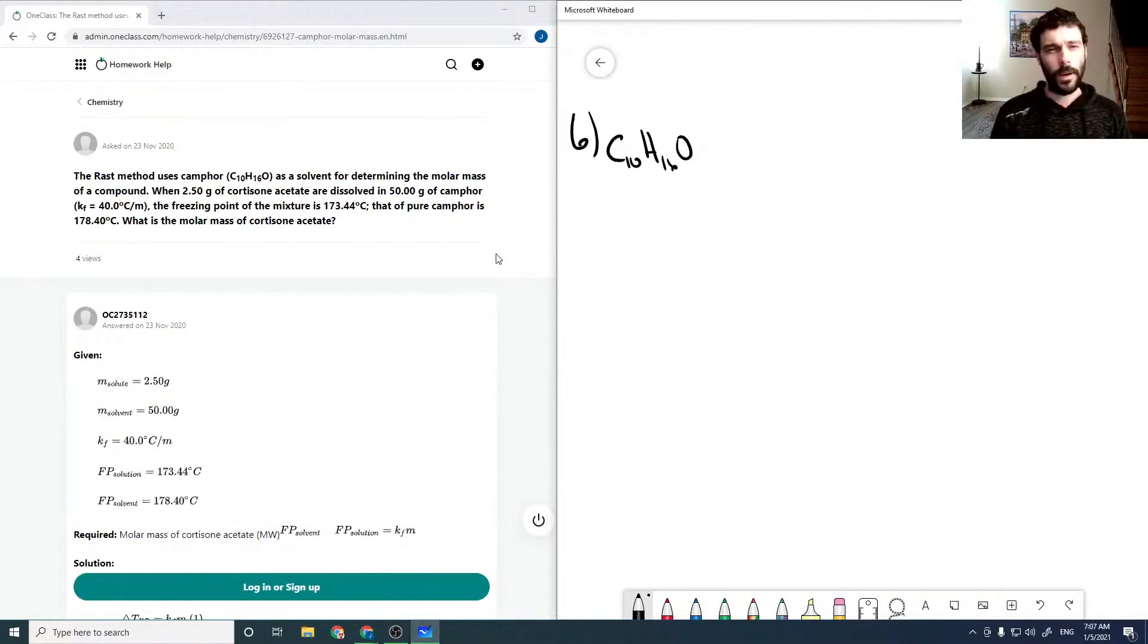When 2.50 grams of cortisone acetate are dissolved in 50 grams of CAMP-4, the freezing point of the mixture is 173.44, and that of pure CAMP-4 is 178.40. And then it asks us to solve for the molar mass of cortisone acetate.